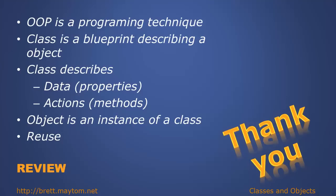In review: object-oriented programming is a programming technique. A class is a blueprint describing an object. A class describes the data, known as the properties, and the actions, known as the methods. Objects are instances of a class, and one can create multiple instances of a class. Object-oriented programming focuses on the reuse of code.